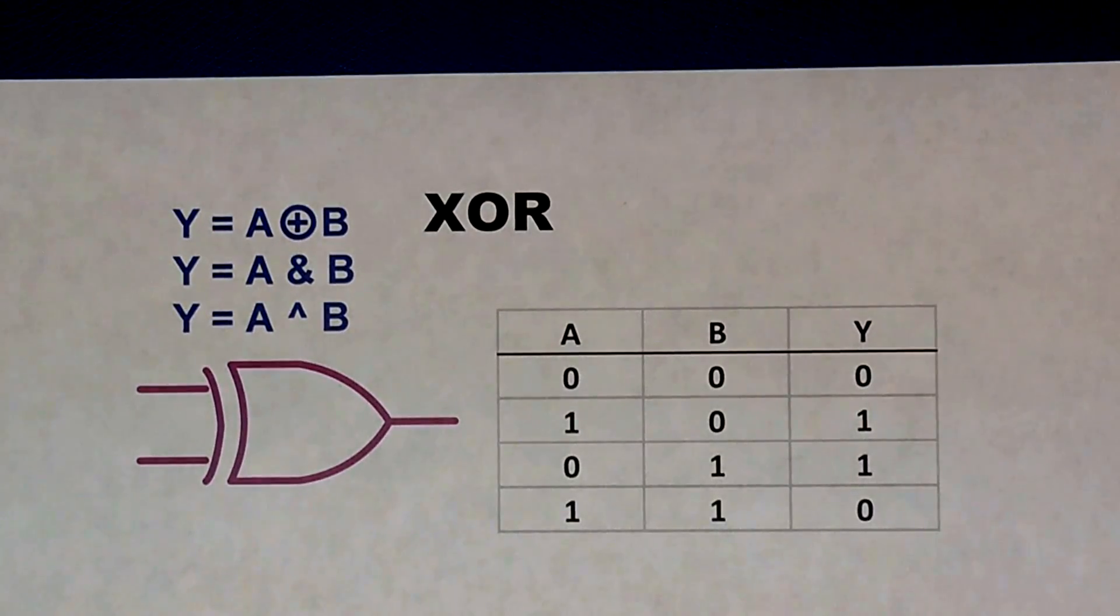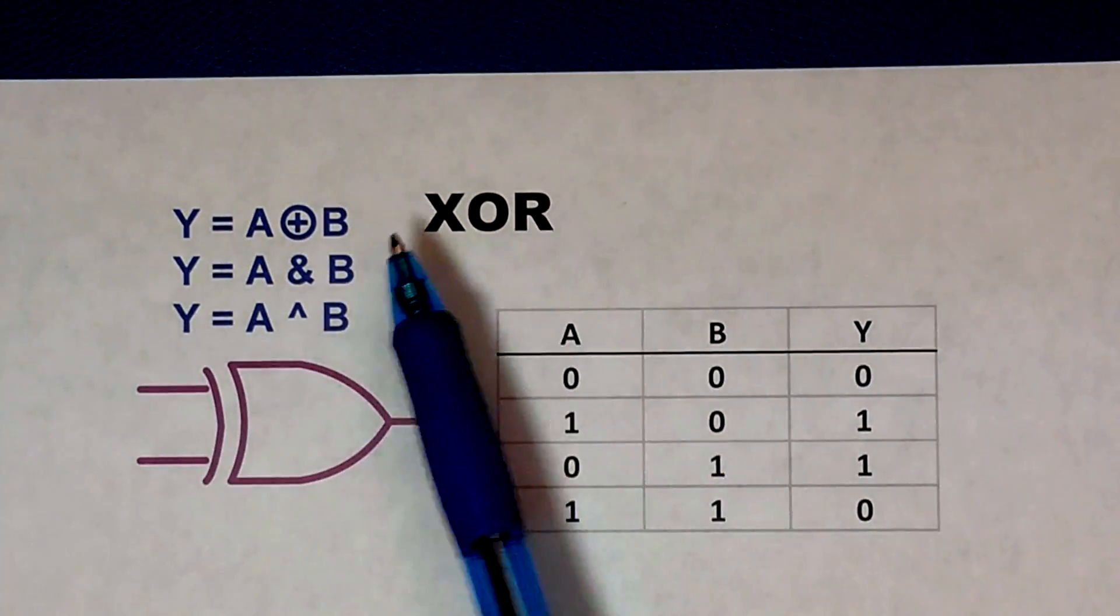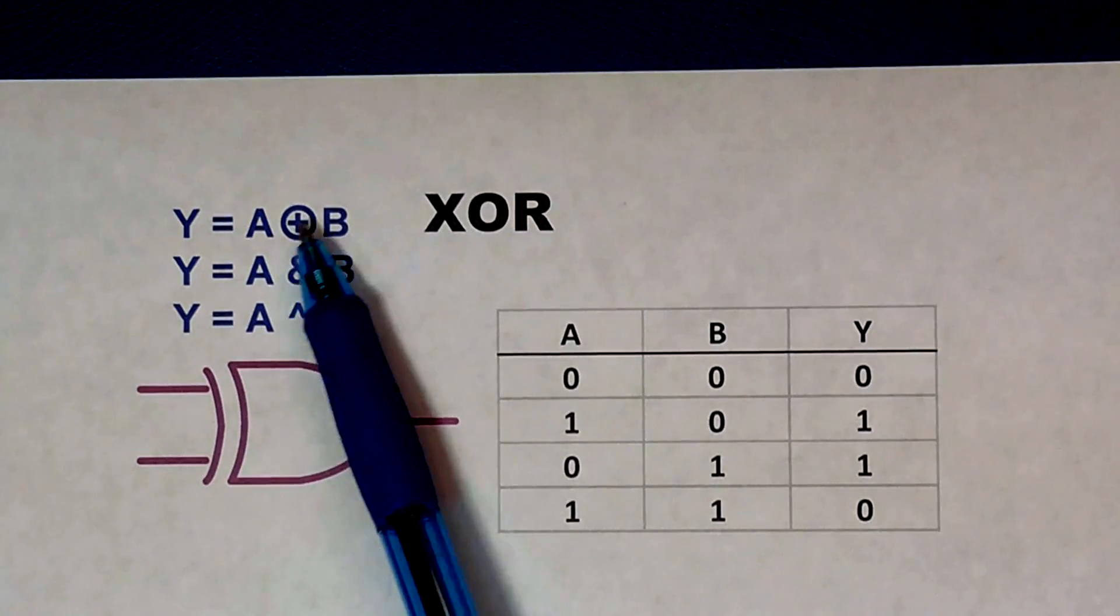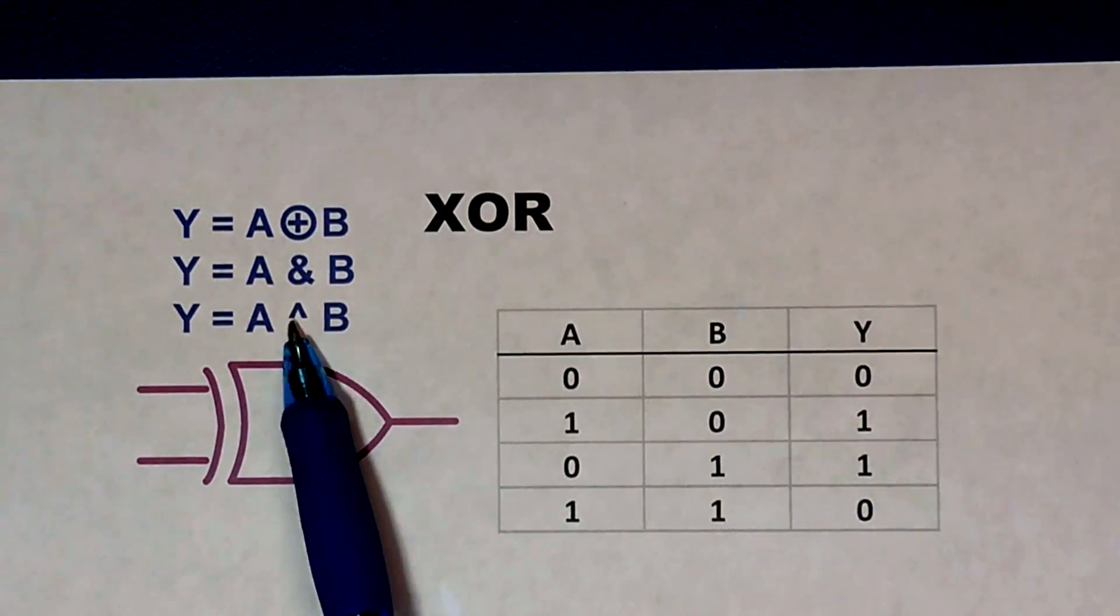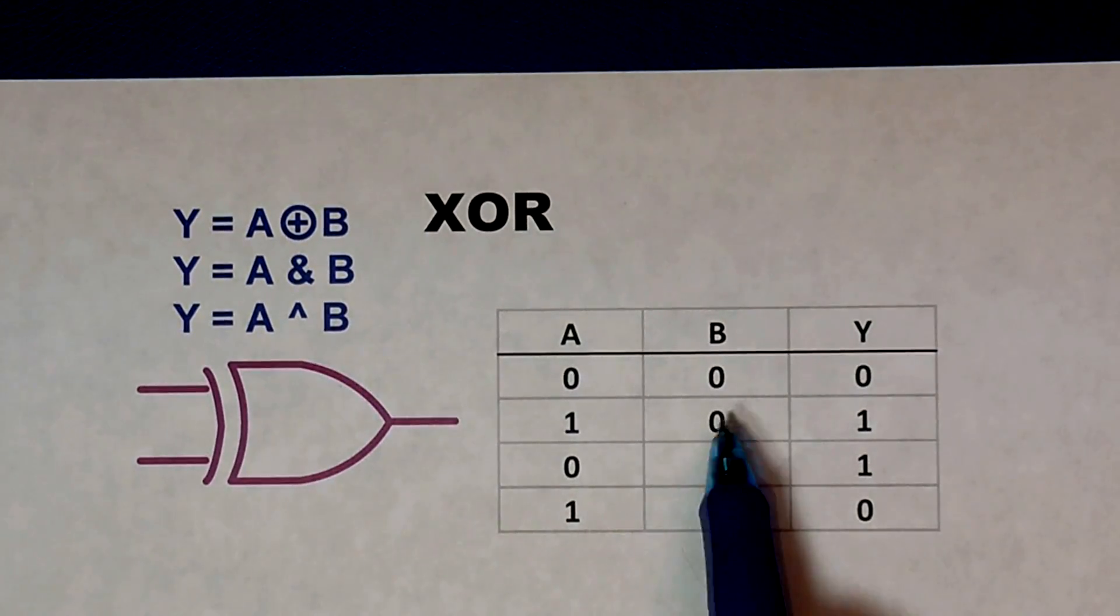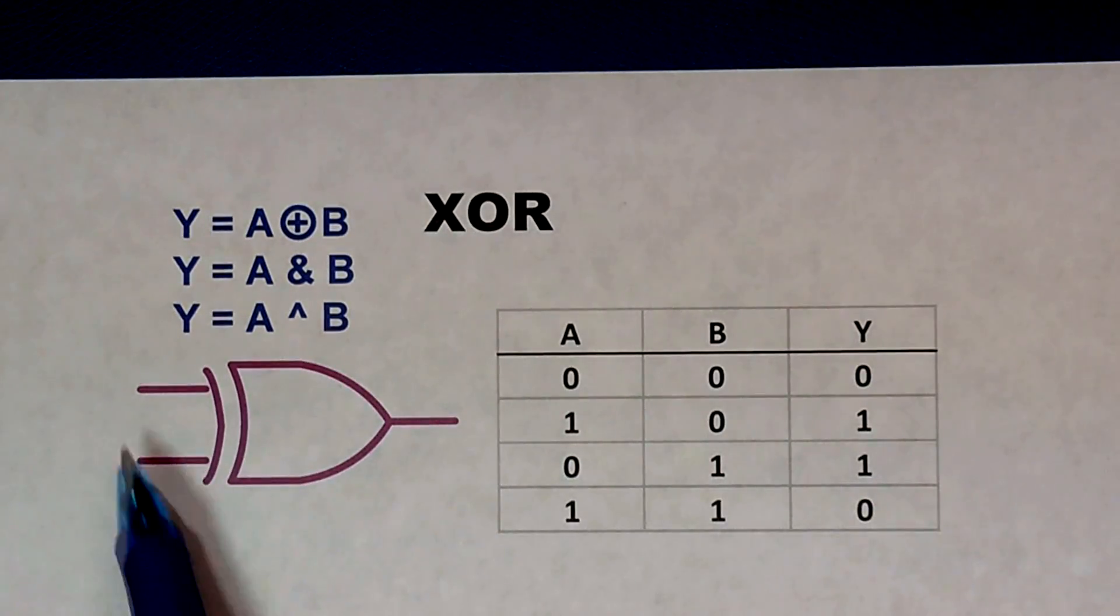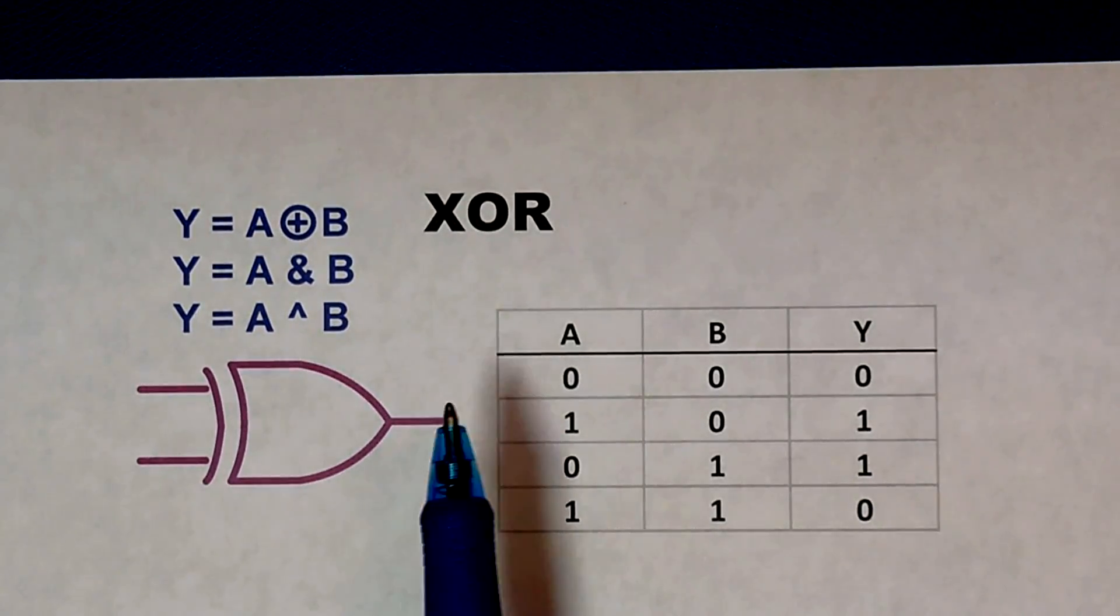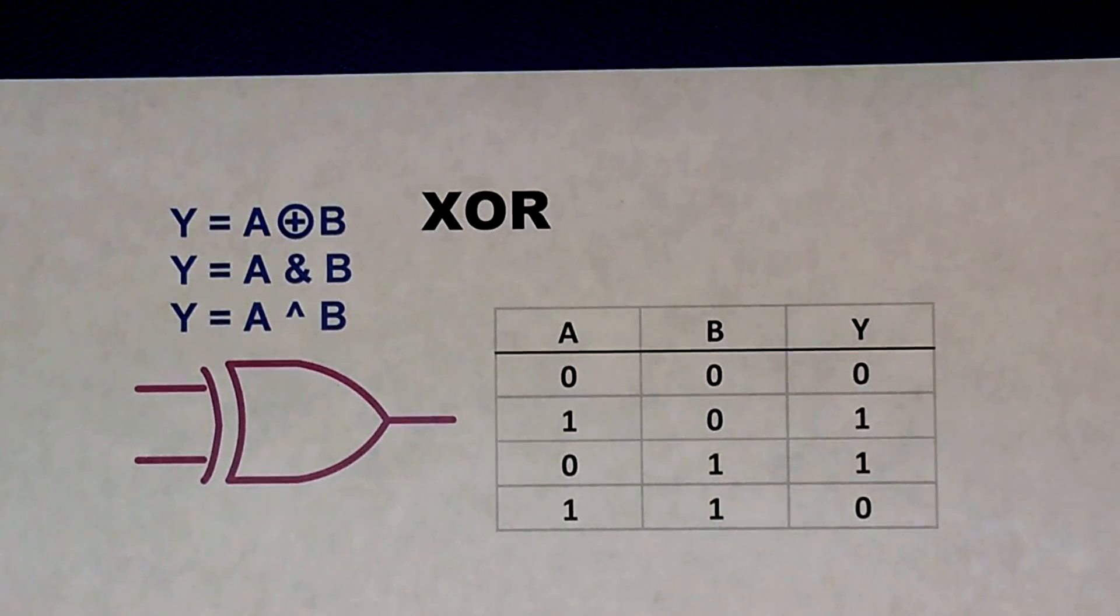Here's one of my favorites, an exclusive OR. Squirrely little sucker. LS86, I think it was. Here's our squirrely little hand-drawn signal for how to make an exclusive OR. Sometimes they use an ampersand, sometimes the little caret symbol. But quite simply, it is true only if there's a one and a zero or a one and a zero, or a true and a not true. If both of these are equal, it will not be true. So it's exclusive. It's an OR, but not both.